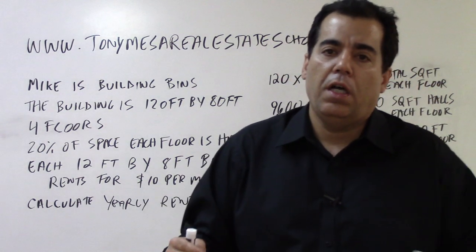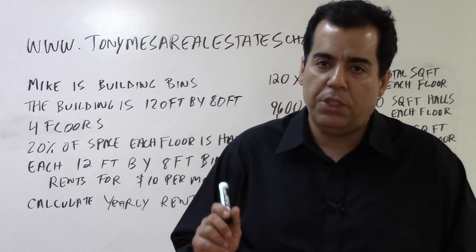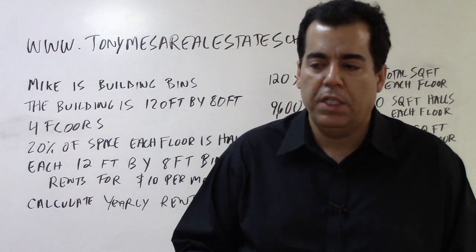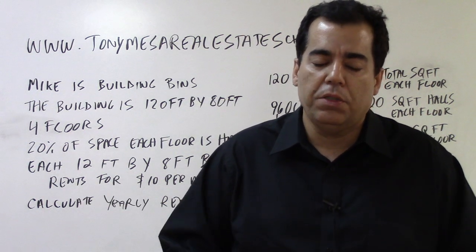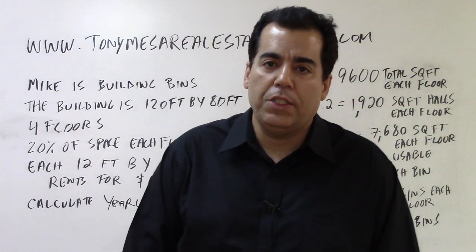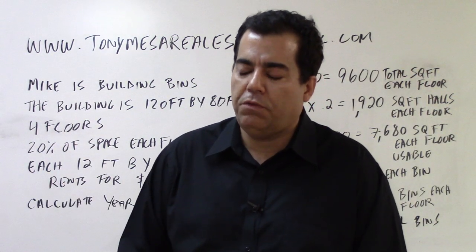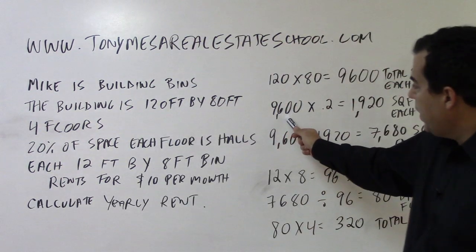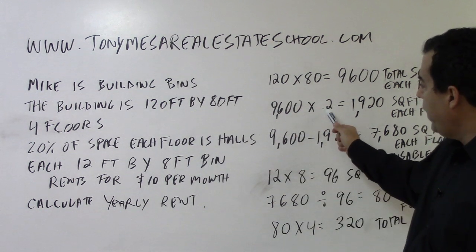Now I've got the total square footage of each floor, but they've told me that 20% of the space is hallways. If 20% of the space is hallways or elevators, you cannot also build the storage rooms there. That means 20% of the space on each floor is not usable, and we need to subtract that from the total square footage to get the usable square footage. So I take 9,600 square feet times 0.2.